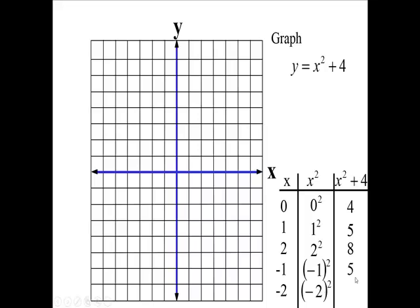Square negative two, you're going to get four, and four plus four is eight. Okay, so here's some points here. Okay, we have the point zero four.